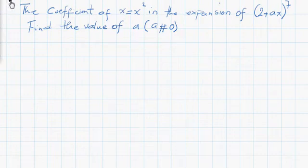Hello guys, welcome to this video. In this video, we're going to expand the expression 2 plus ax to the power 7, and find the value of a with a different from 0, with the condition that the coefficient of x will be equal to the coefficient of x to the power 2.